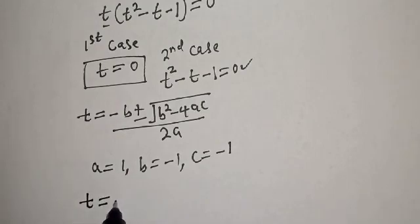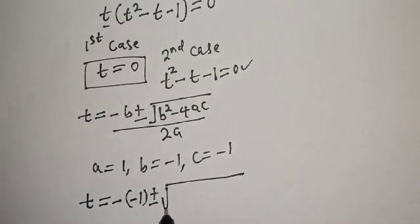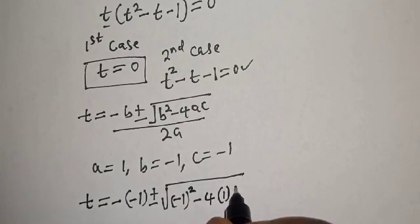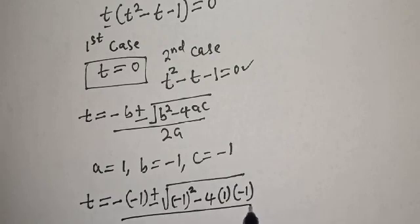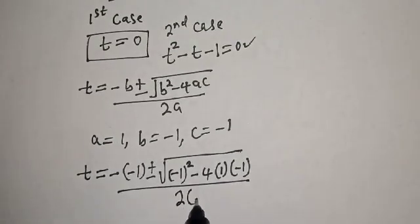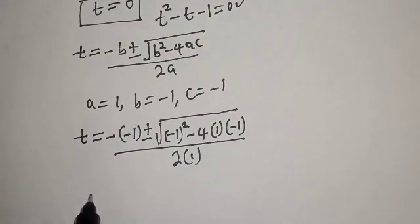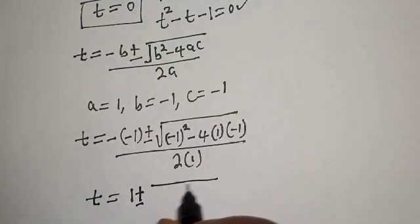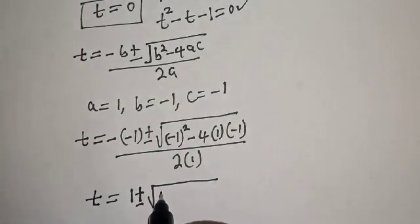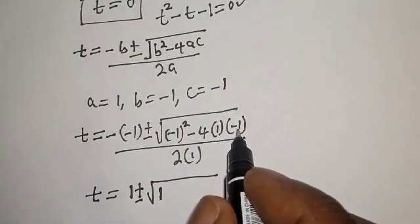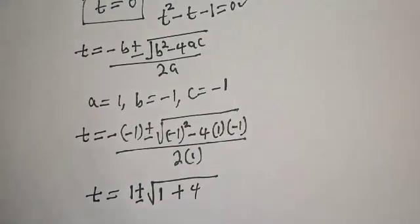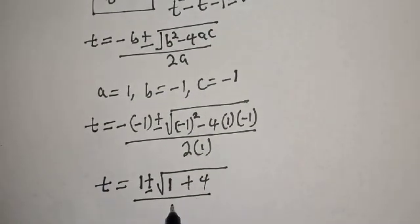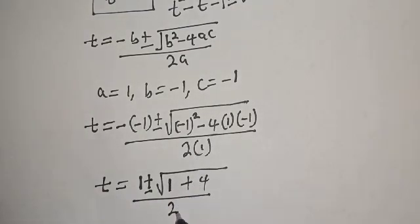Substituting: t equals negative bracket negative 1, plus or minus square root of negative 1 squared minus 4 times 1 times negative 1, all over 2 times 1. This simplifies to t equals 1 plus or minus square root of 1 plus 4, over 2.